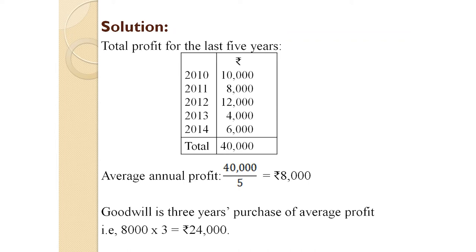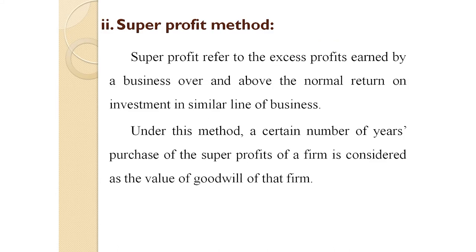To solve this, we follow two steps. Step one: calculate average annual profit. Total profit for the last five years = ₹40,000. Average annual profit = ₹40,000 ÷ 5 = ₹8,000. Step two: calculate goodwill. Goodwill = three years' purchase of average profit = ₹8,000 × 3 = ₹24,000.